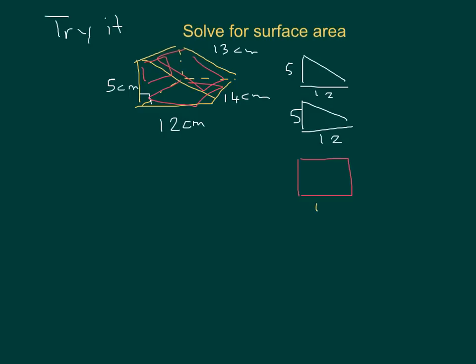The first rectangle is numbered 1 and measures 13 by 14. The second rectangle has a length of 5 and is 14 wide — numbered 2. The third rectangle, numbered 3, is at the bottom and measures 12 by 14. Now that I have all my shapes I know the formulas to use and I'll go ahead and solve.